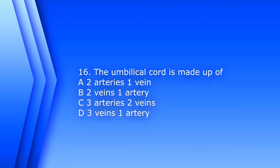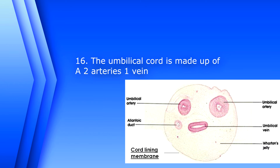Question 16. The umbilical cord is made up of: A. Two arteries and one vein. B. Two veins and one artery. C. Three arteries and two veins. D. Three veins and one artery. The answer is A. Two arteries and one vein.